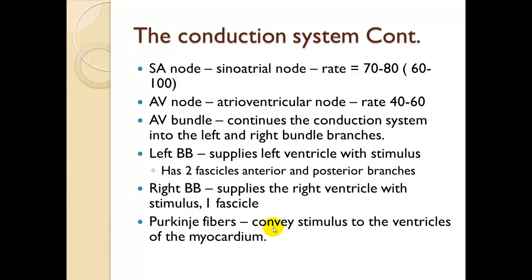The sinoatrial node gives a rate of about 70 to 80 beats per minute, with a normal variance of 60 to 100 beats per minute. The atrioventricular node runs at 40 to 60 beats per minute. The AV bundle continues the conduction system into the left and right bundle branches. The left bundle branch supplies the left ventricle and has two fascicles — anterior and posterior. The right bundle branch supplies the right ventricle with one fascicle. Purkinje fibers convey the stimulus to the ventricular myocardium.